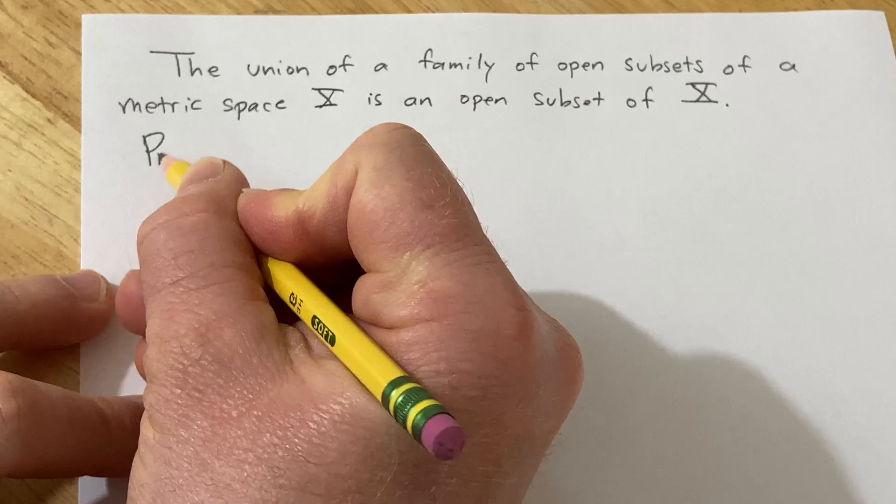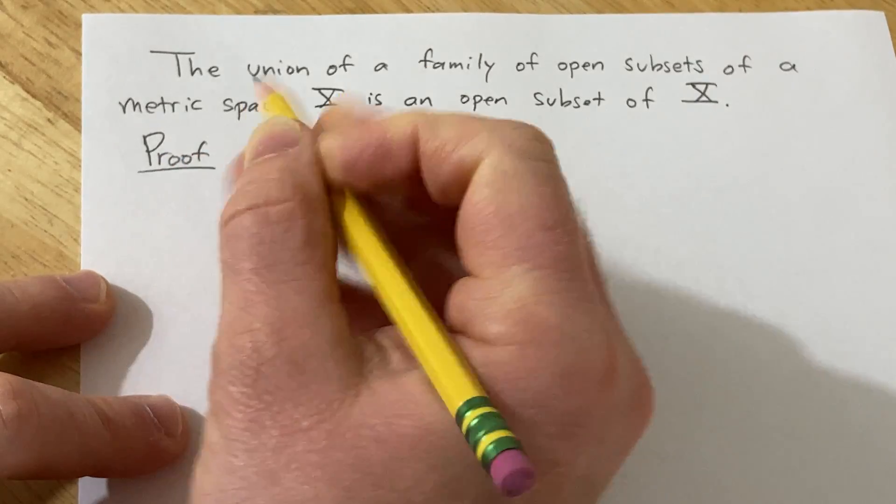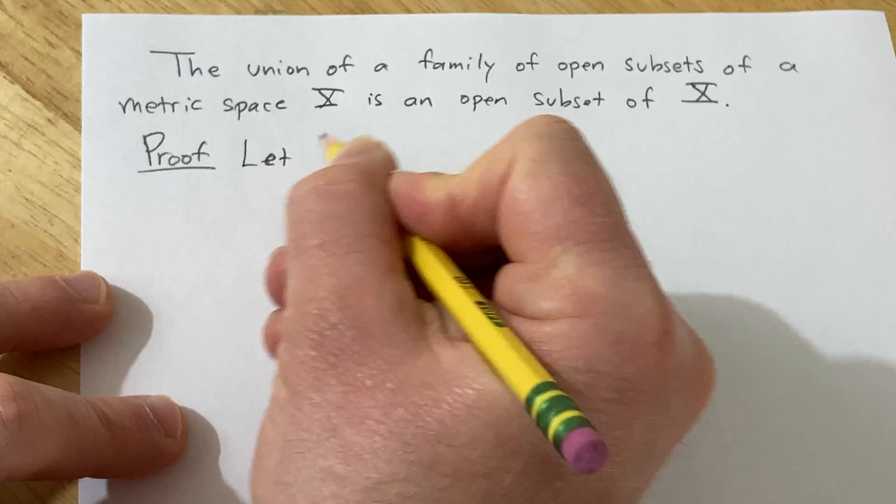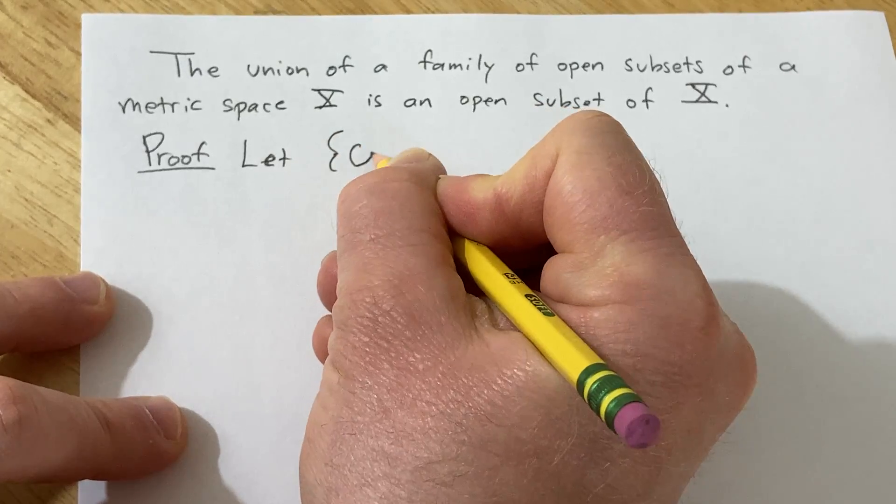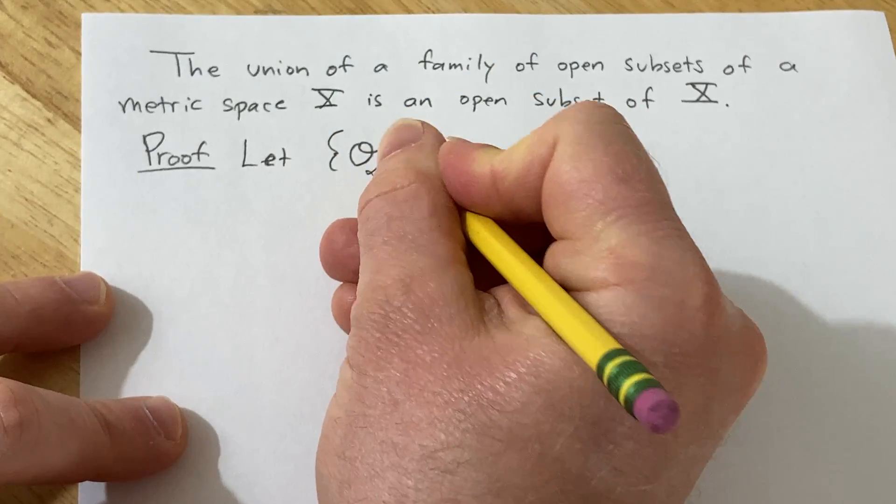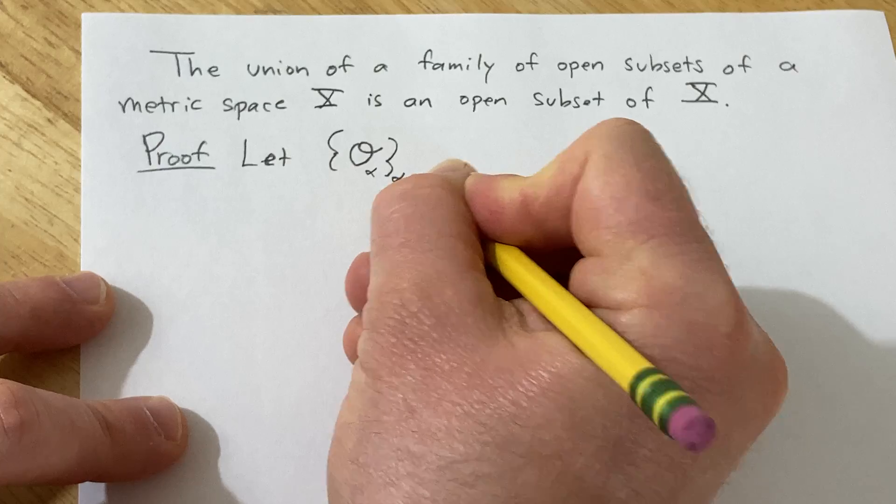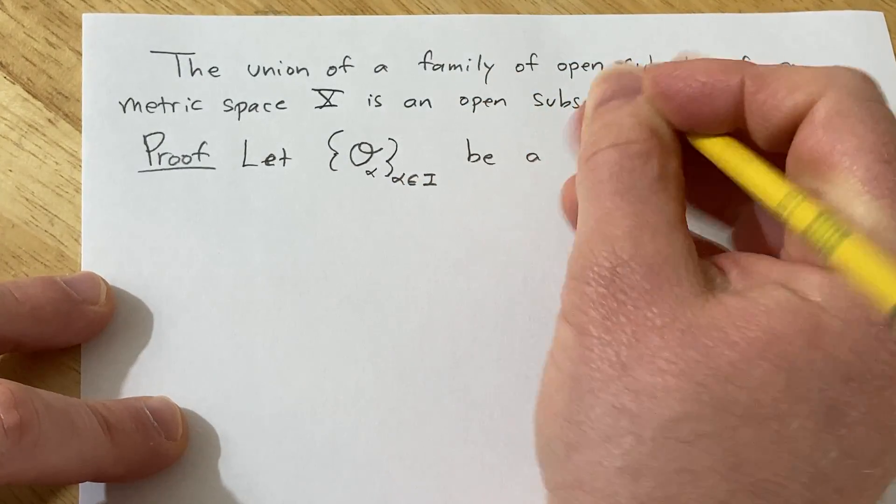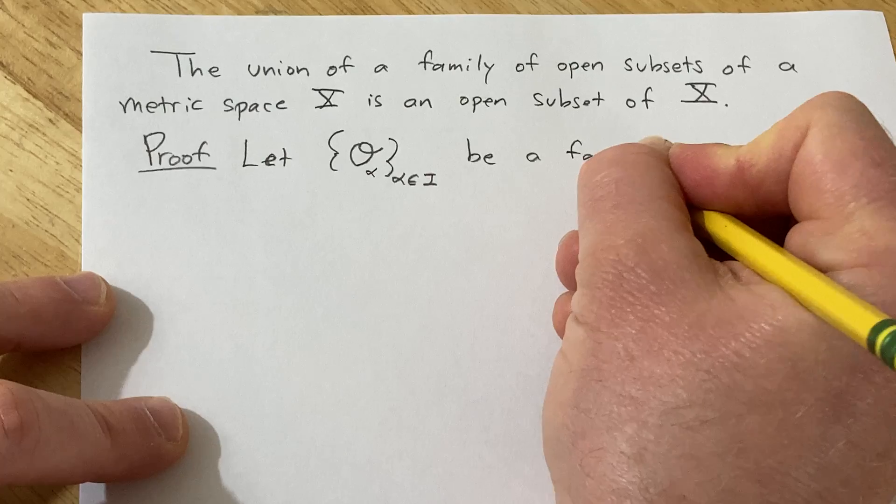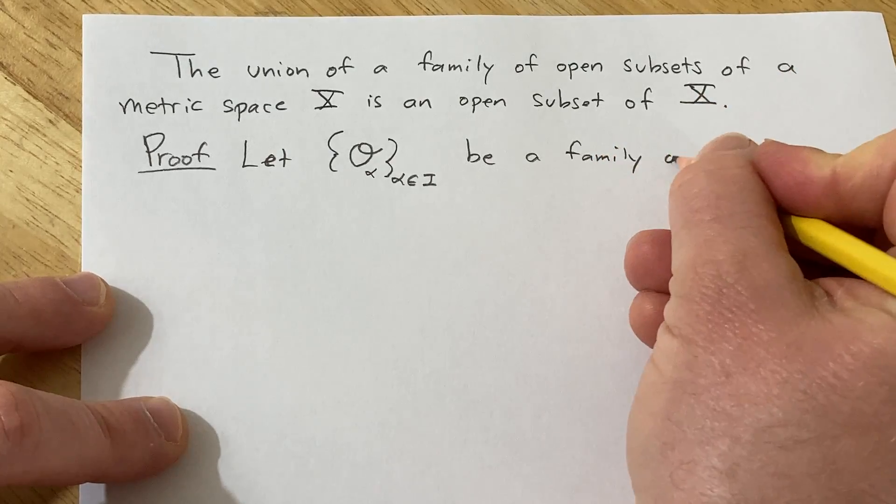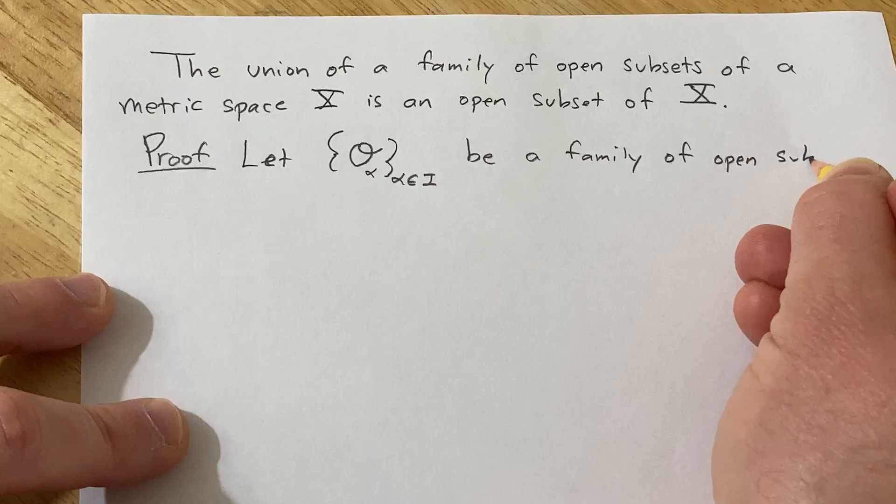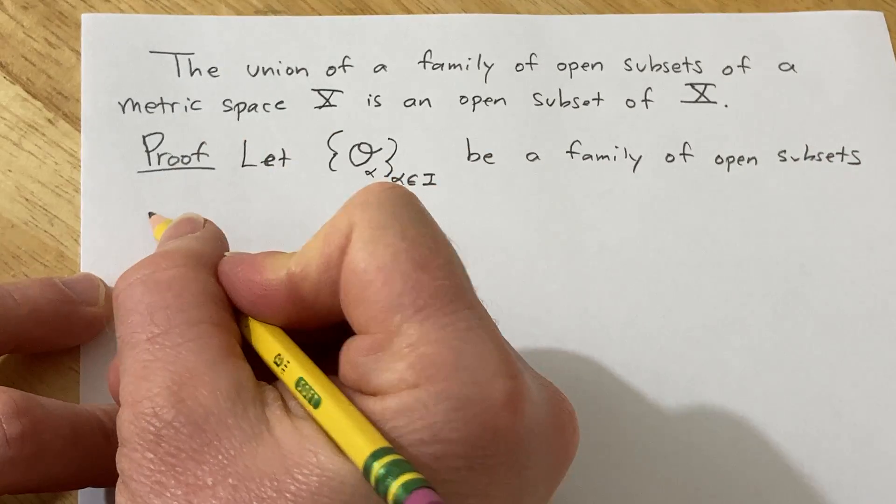Let's go ahead and go through the proof. So we'll start as follows. Let O sub alpha, where alpha runs through some index set i, be a family of open subsets of capital X.